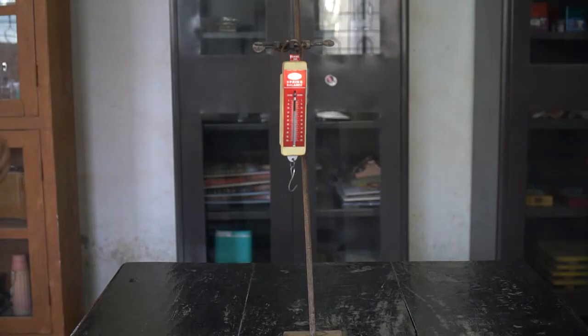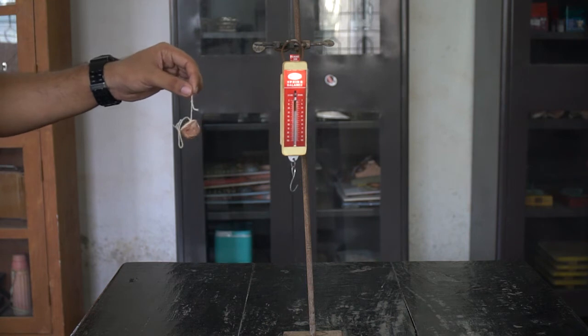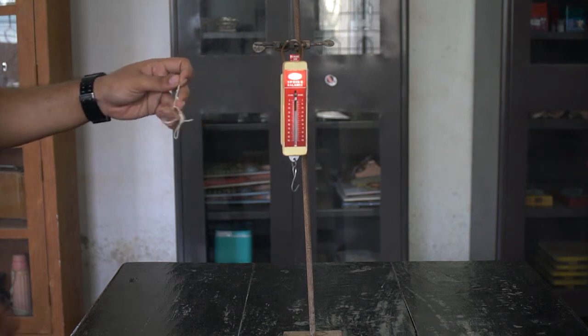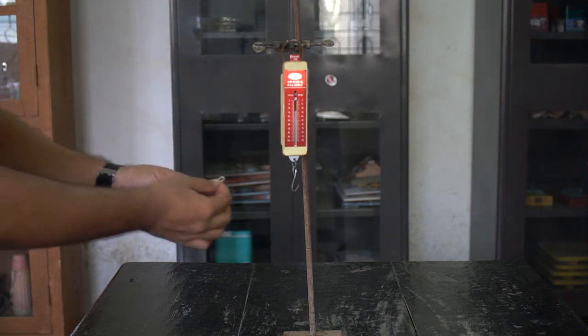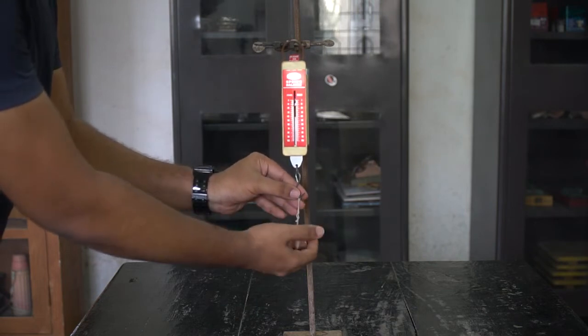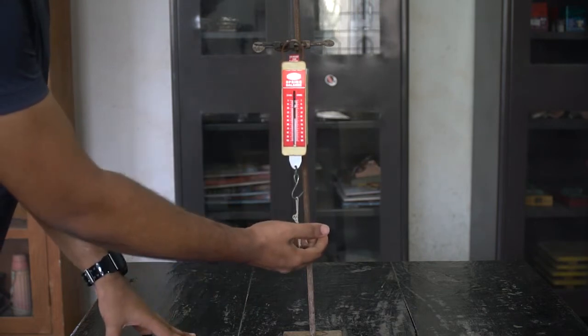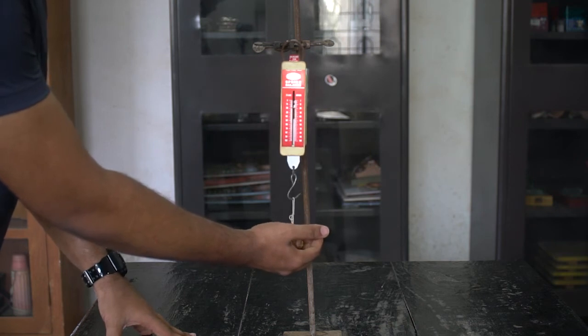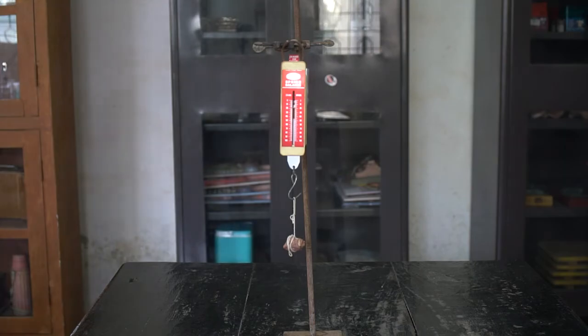Starting with sample 1, we will take the sample which is a rock and use the loop on the thread provided to suspend it on the spring balance. Making sure that the object and the spring do not bob or swing from left to right, we carefully lower it down, then we take a closer look and write down the reading displayed on the spring balance.